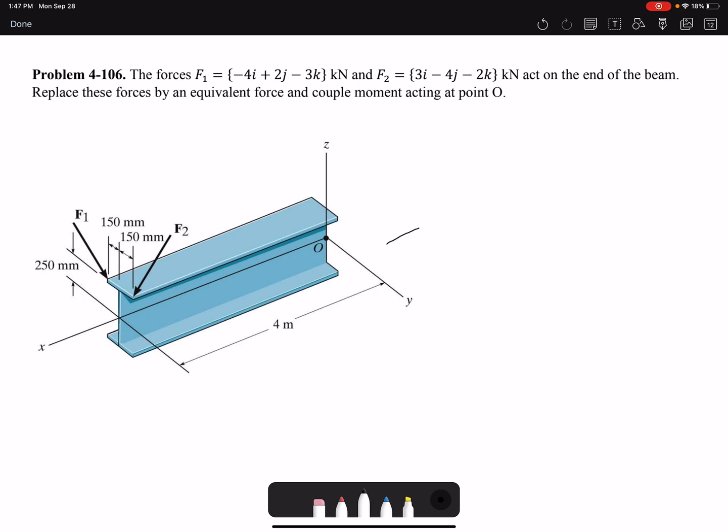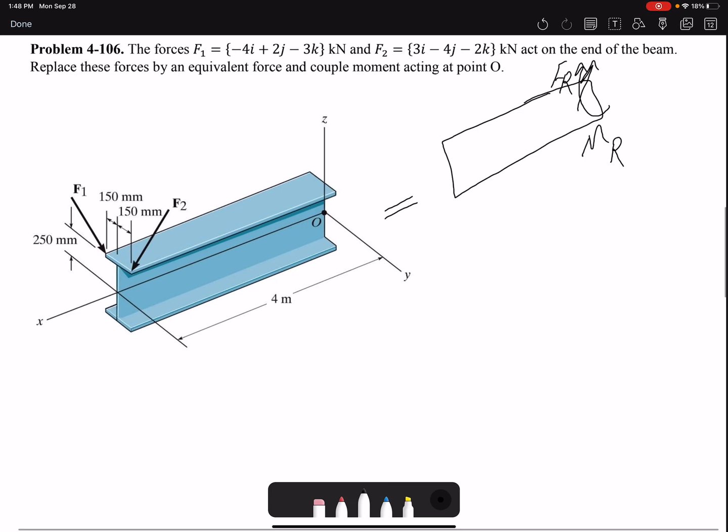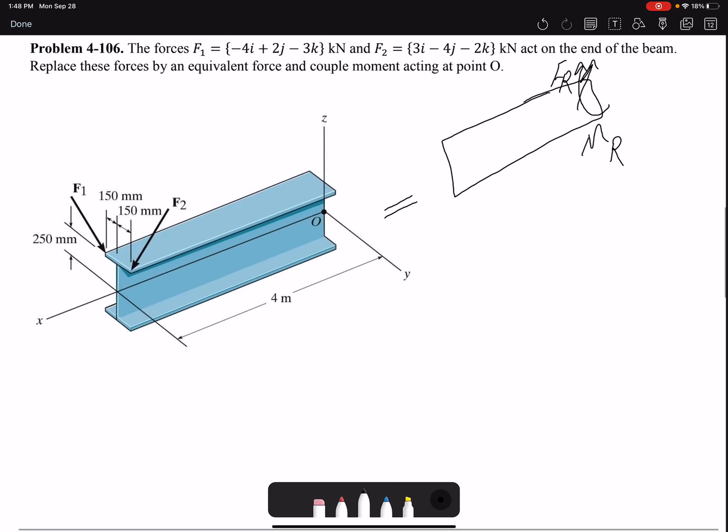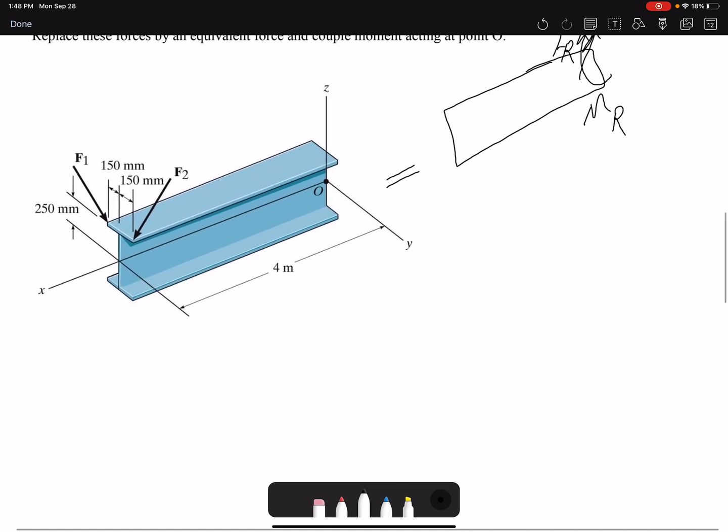So we are going to replace our beam with a beam that only has resultant force and a moment or a couple moment at point O. So for our beams to be equivalent, the summation of forces in each beam should be the same and also summation of moment.